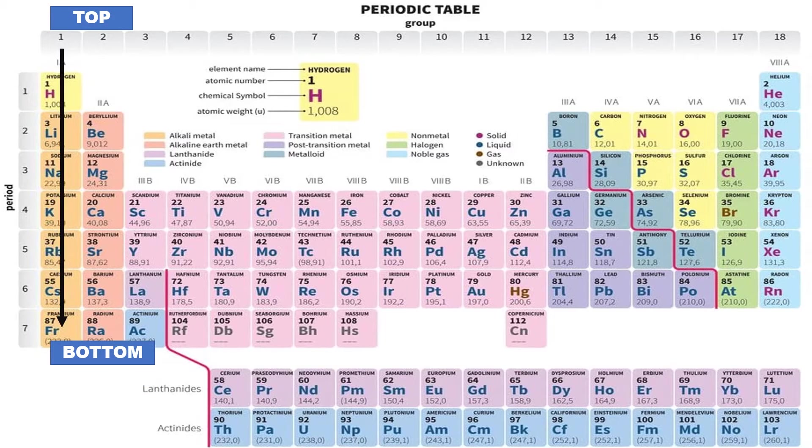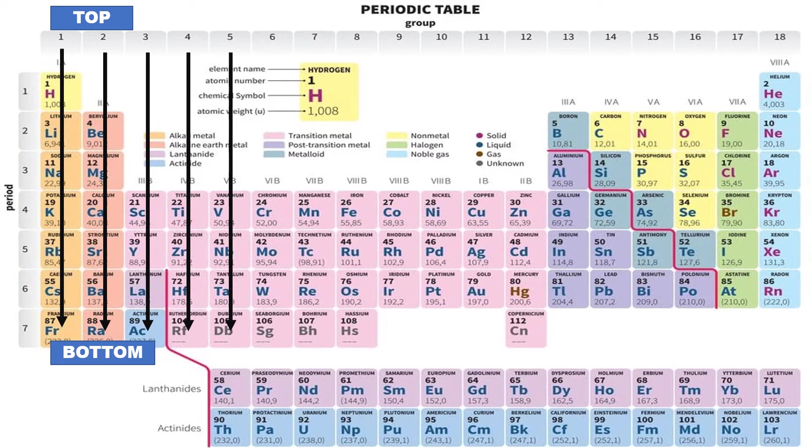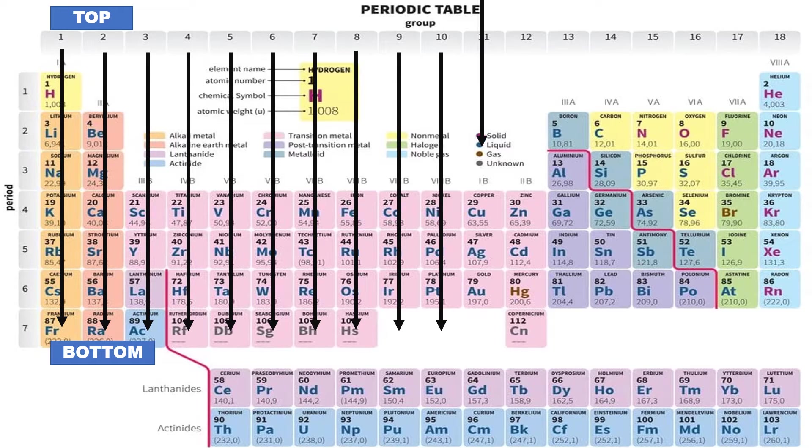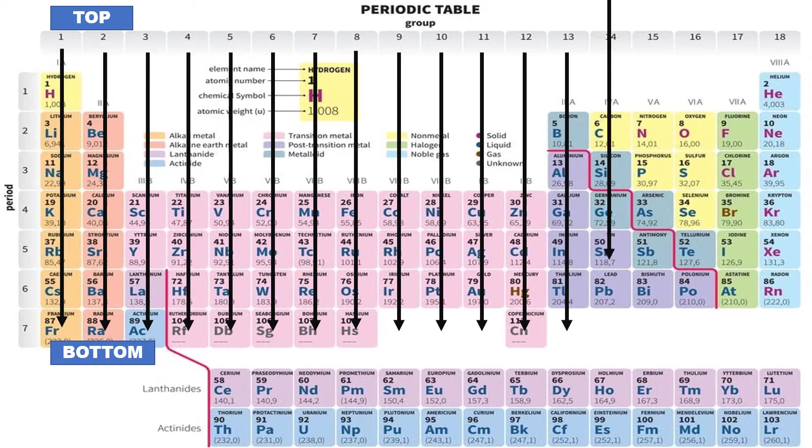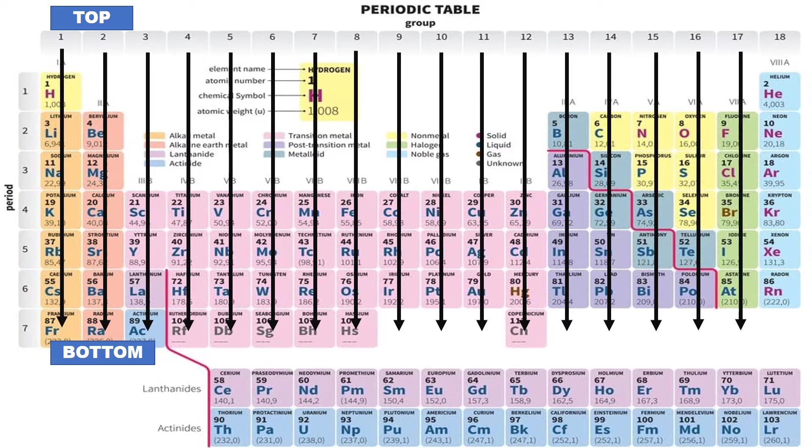Groups are the elements arranged from top to bottom. So we have group 1, group 2, 3, 4, 5, 6, 7, 8, 9, 10, 11, 12, 13, 14, 15, 16, 17, and lastly 18. So again, there are 7 periods and 18 groups.